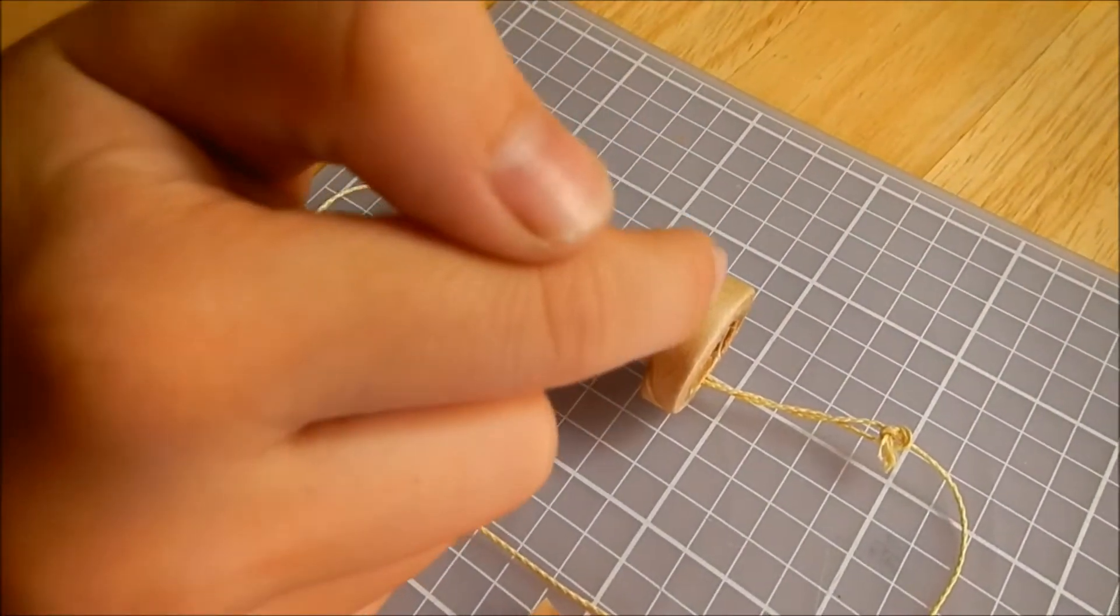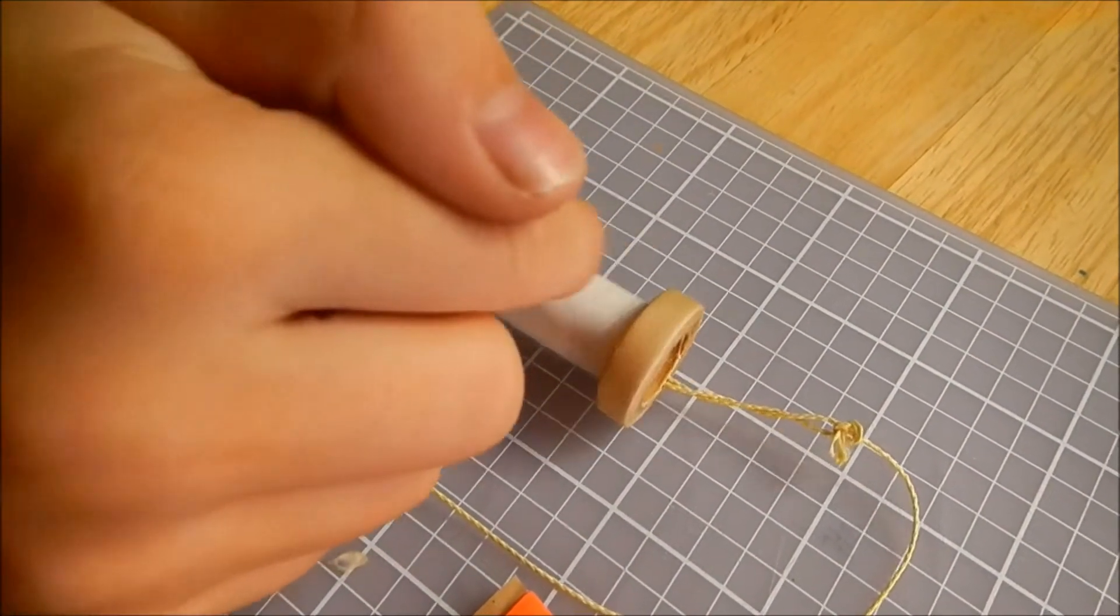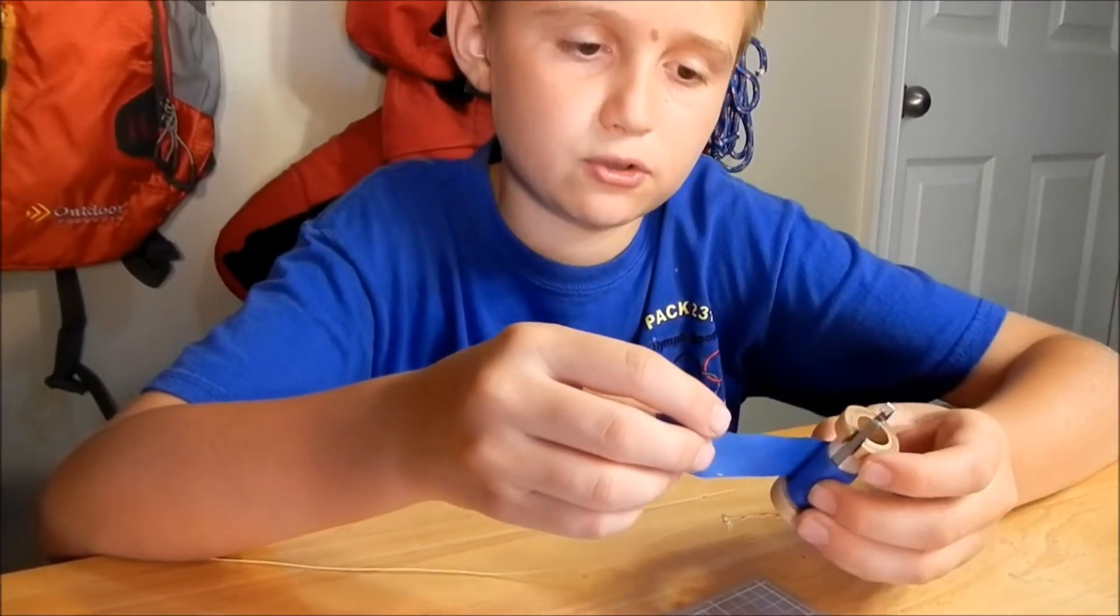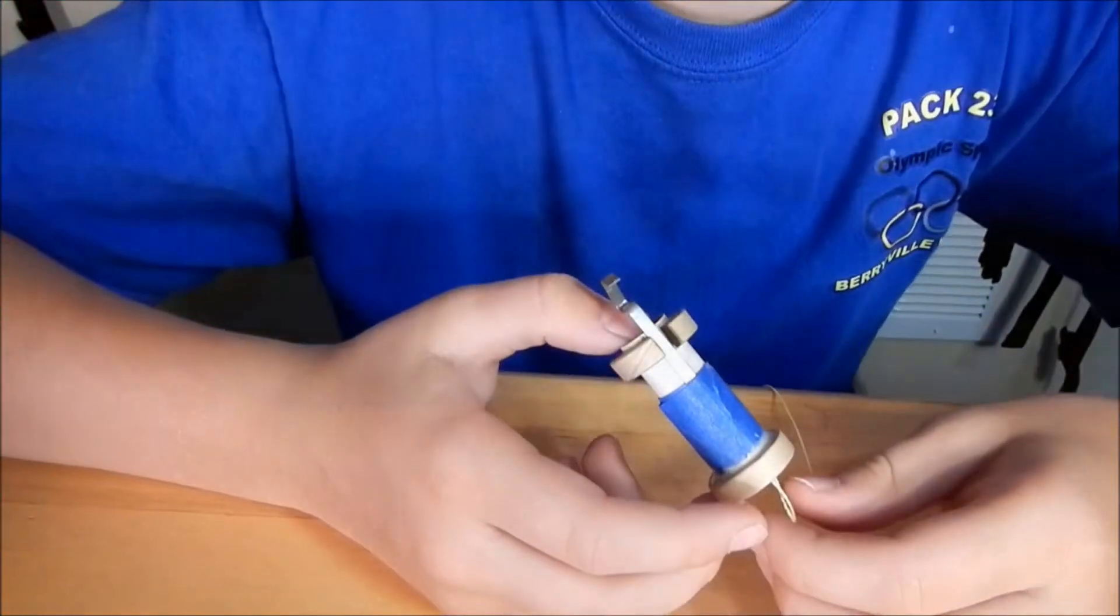So guys, you do the same part to this side that you did to the other side, and then we're going to wrap this part around with masking tape. You want about three layers thick. So guys, we just finished the motor mount and now we're just going to put it aside and let it dry.